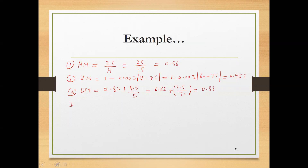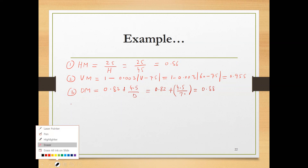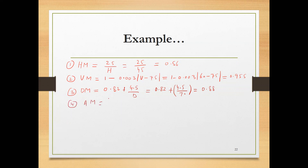The fourth multiplier is AM, the asymmetry multiplier, where the angle of asymmetry is in degrees. That is equal to 1 minus 0.0032 times the angle of asymmetry. So that is 1 minus 0.0032 times 45 degrees, which equals 1 minus 0.144, giving 0.856.